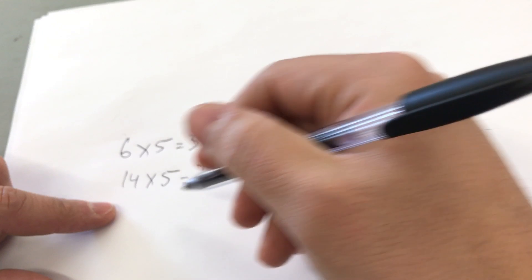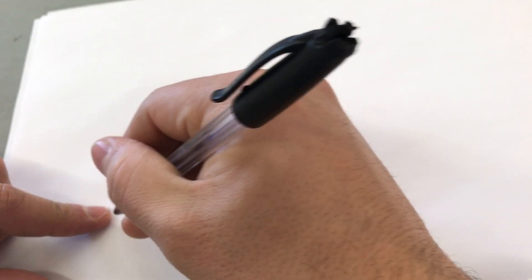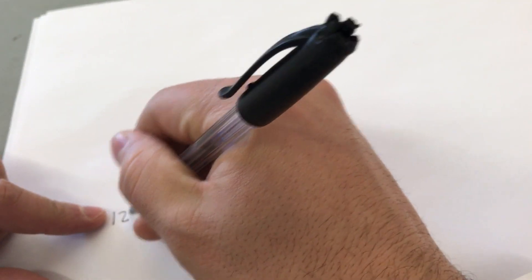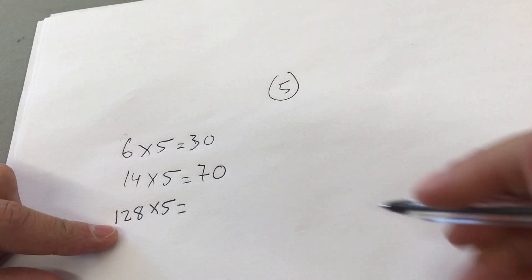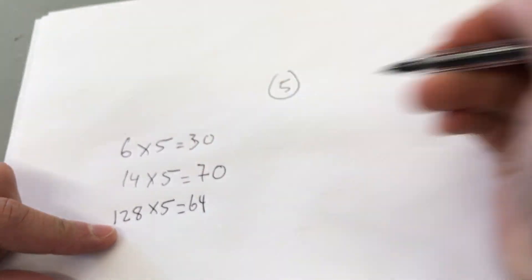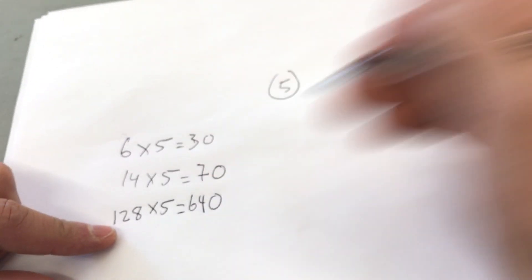Let's get a little bit of a bigger number over here. Let's get a number like 128 times 5. Now half of 128 is going to be 64 and then we simply add a 0. There you go, 640.